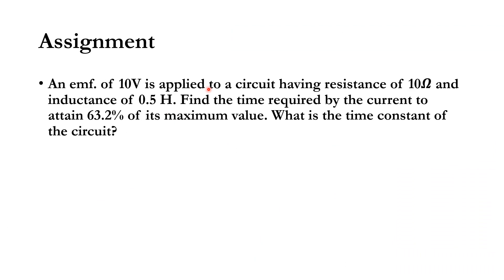Example problem: 10 volts is applied to a circuit having resistance of 10 ohms and inductance of 0.5 henry. Find the time required by the current to attain 63.2% of its maximum value — that is, the time constant of the circuit. Since there is a resistor and inductance, this is an LR circuit, so the time constant equals L/R equals 0.5 divided by 10 equals 0.05 seconds.